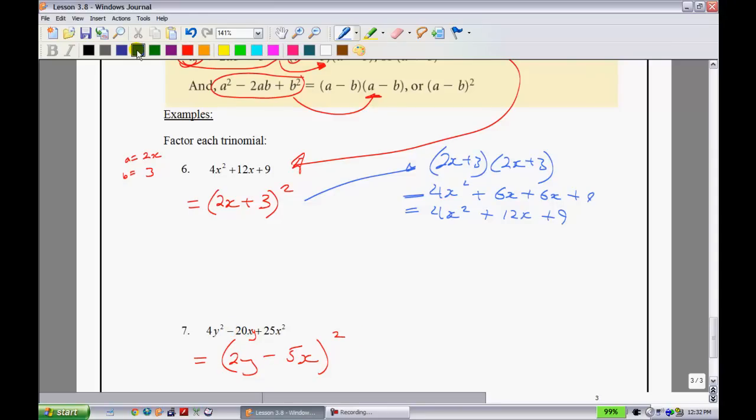And to prove this to you, over here on the side, you would have 2y-5x and 2y-5x. So we have 2y times 2y is 4y²-10xy-10xy+25x². And when you simplify this, you'll see that we'll get back to what the question began with.